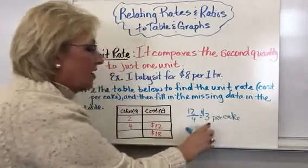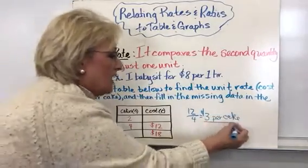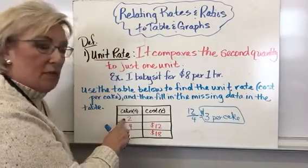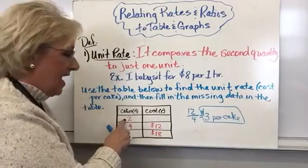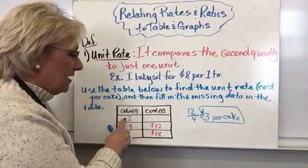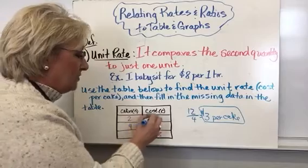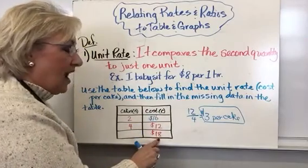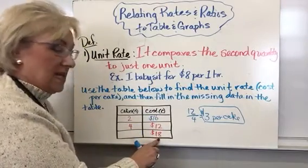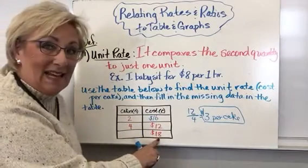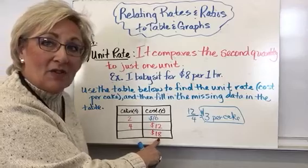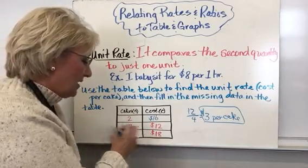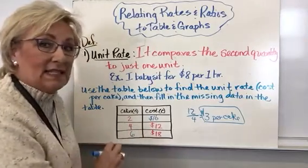So if I know it's $3 per cake, I can multiply three times the number of cakes. Two cakes are going to cost me $6. And I can divide three into 18 — three goes into 18 six times — so I know that order had to have been six cakes.